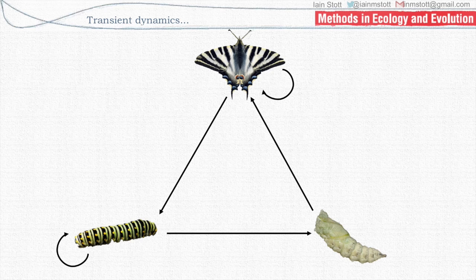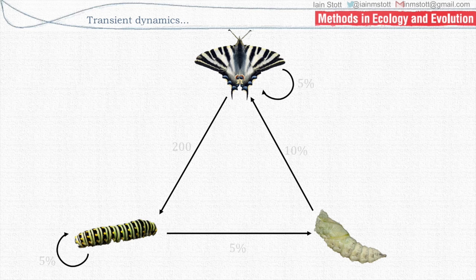For example, say one month. In one month, a caterpillar can remain being a caterpillar, or it can become a chrysalis. A chrysalis can become a butterfly, and so on. In ecology, what we do is we attach probabilities to these things. Apologies if there are any entomologists in the audience — I completely made these numbers up, but it's just an example. Maybe 5% of the caterpillars survive each month, 5% become a chrysalis, so 90% of them die.